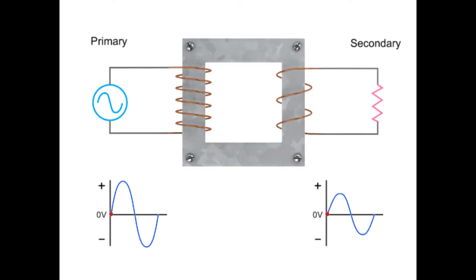The constantly changing current driven by an alternating voltage source induces a changing magnetic field in the core of the transformer.